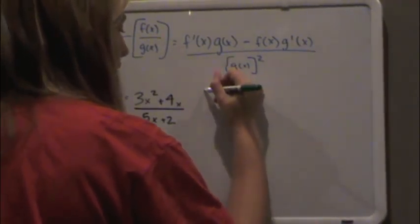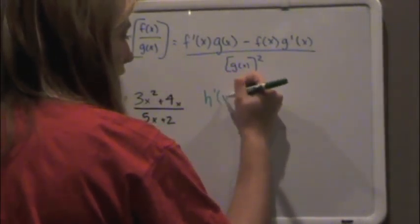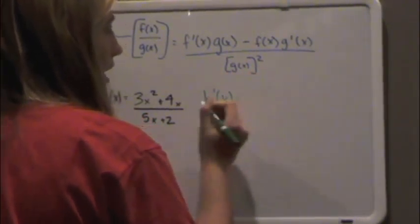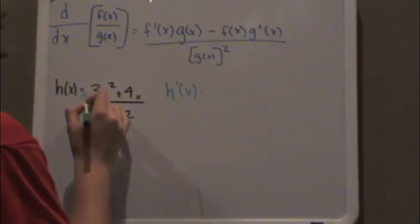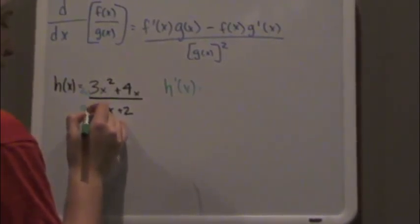So let's say we have h prime of x. We want to find out what h prime of x equals. And we're going to label this to help us. We're going to label this f of x and the denominator is g of x.